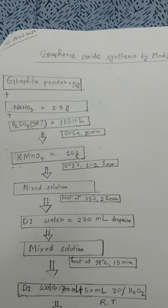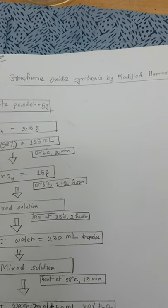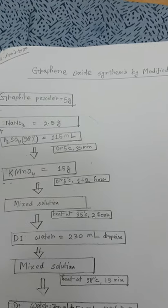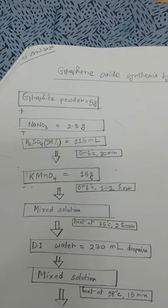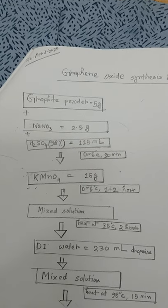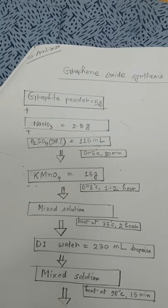I am synthesizing graphene oxide by the modified Hummers method. It's actually the graphite powder that is oxidized by potassium permanganate.